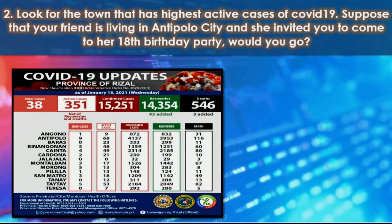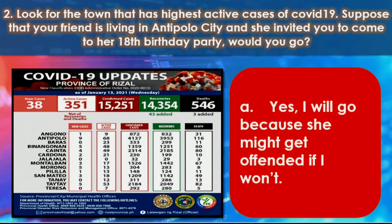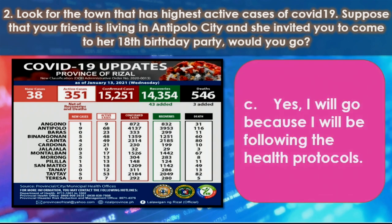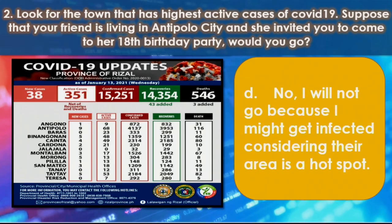Number 2. Look for the town that has the highest active cases of COVID-19. Suppose that your friend is living in Antipola City and she invited you to come to her 8th birthday party. Would you go? A. Yes, I will go because she might get offended if I won't. B. No, I will not go because my father will be mad at me. C. Yes, I will go because I will be following the health protocols. D. No, I will not go because I might get infected, considering their area is a hot spot.